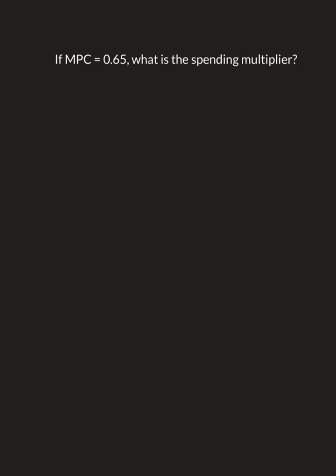A question came in to talk about the math side of the spending multiplier. So let's start from the beginning. If you're given MPC equal to 0.65, the first type of question you'll get asked is what exactly is the spending multiplier? What is the value of that spending multiplier?